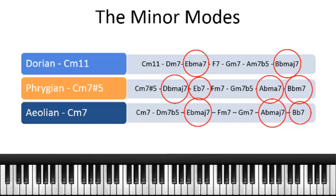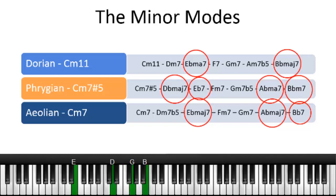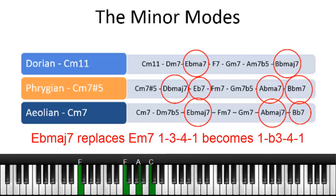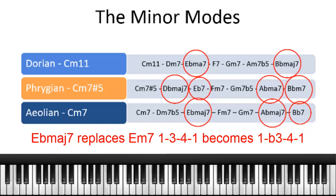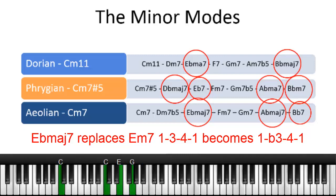We already used the B flat major because it's also in the Mixolydian mode. So the new chord in this example would be the E flat major. We're going to use a slightly different chord progression: one, three, four, back to one. Only in this case we're going to use the E flat tone in between.